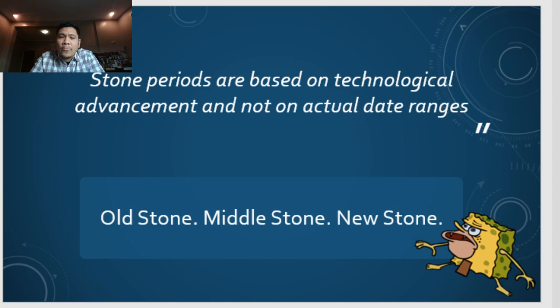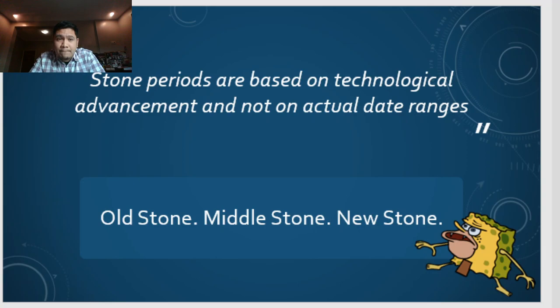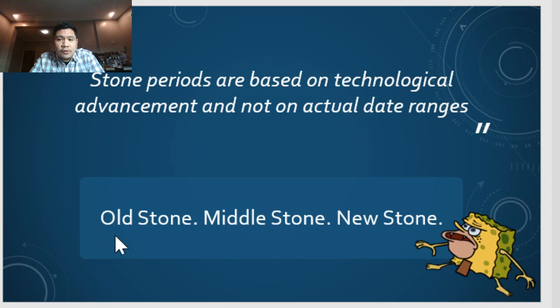Stone periods are based on technological advancement and not on actual date ranges — similar to what Jorgensen said about materials. For the Paleolithic, it is also called 'Old Stone.' Mesolithic means 'Middle Stone.' And Neolithic — Neo meaning New — is 'New Stone.' So we have Old Stone, Middle Stone, and New Stone, all under the Stone Age.